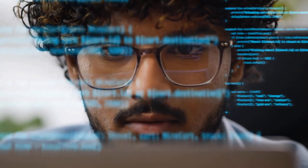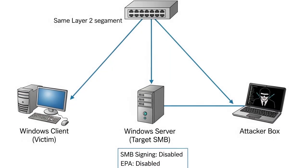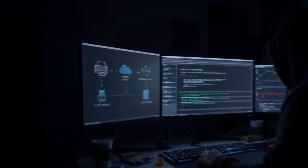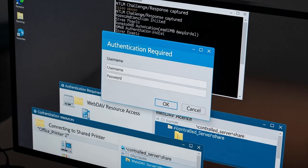Let's talk about reproduction steps — how to reproduce the vulnerability in a safe lab environment. The first step is to create a lab topology consisting of an attacker VM, a victim client VM, and a target Windows SMB server VM on the same virtual network. Next, ensure the target server does not require SMB signing or EPA. Then, coerce the victim to authenticate — for example, by letting the victim access a shared printer, a WebDAV resource, or an SMB path you control to produce an NTLM challenge response.